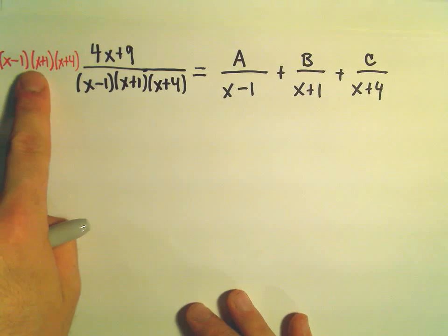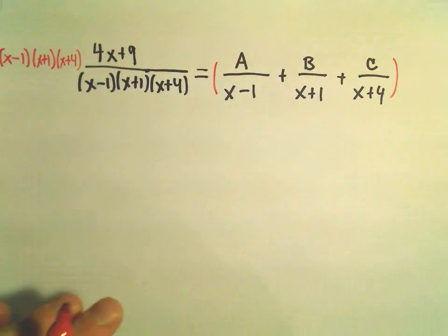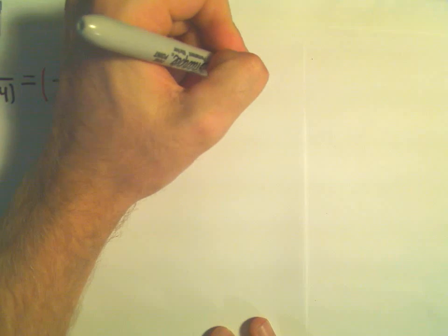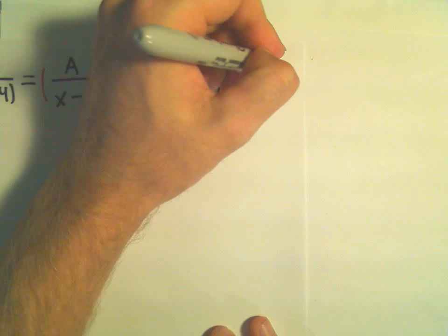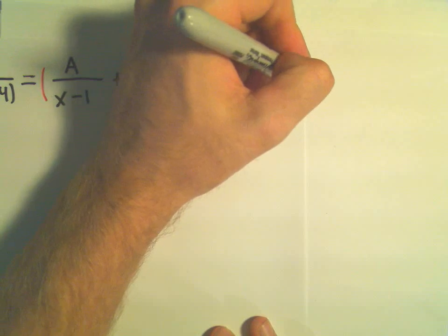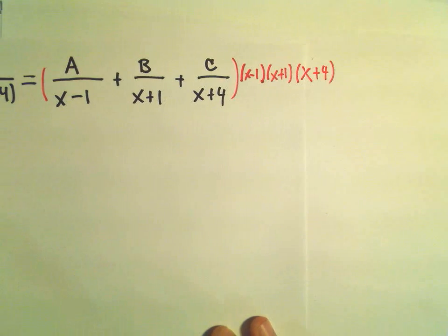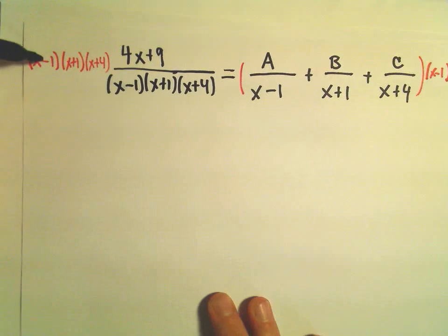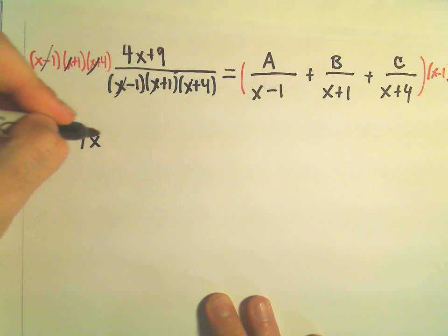So I'm going to multiply by (x minus 1)(x plus 1)(x plus 4). If you do it on the left, we've got to do it on the right as well. On the left side, notice everything would cancel out and we would just be left with our 4x plus 9. That's the whole reason why I do this in the first place.